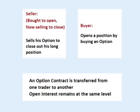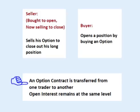However, if the buyer sells his contract to another buyer that is opening a new position, the first buyer closes his position by selling his existing option to the new buyer. No new contract is created and no existing contract is closed out. Rather, an existing contract is transferred from one owner to another. Therefore, Open Interest doesn't increase or decrease.